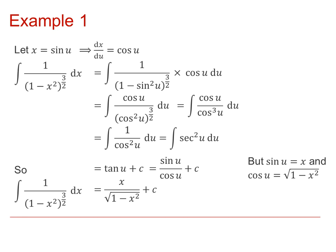To review the full solution: we recognised the square root of 1 minus x squared, so we used the substitution x equals sin(u), giving dx/du equals cos(u). After substituting and rearranging, we obtained the integral of sec²(u), which integrates to tan(u). Then using tan(u) equals sin(u)/cos(u) and substituting back, our final answer is x over the square root of 1 minus x squared, plus c.